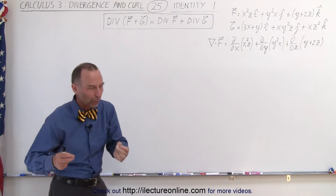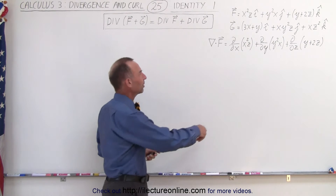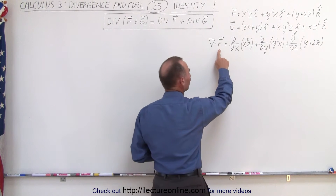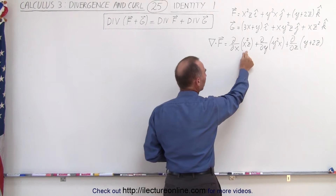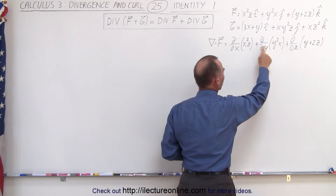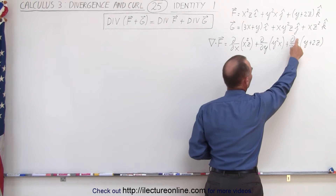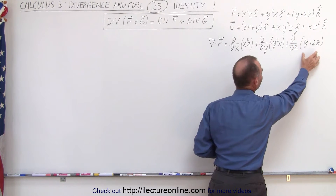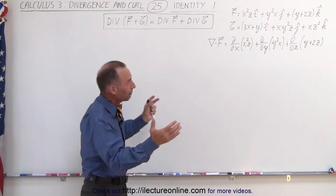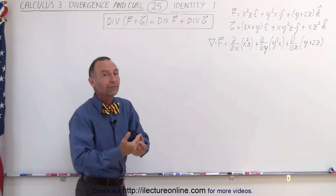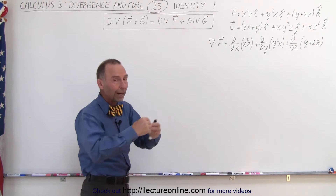If you remember what a divergence is, that makes a lot of sense, because the divergence of a vector field is simply the partial derivative with respect to x of the x component, plus the partial derivative with respect to y of the y component, plus the partial derivative with respect to z of the z component of the vector field. So it shouldn't really matter if we combine two vector fields and then take the divergence, or take the divergence first and then combine the results.